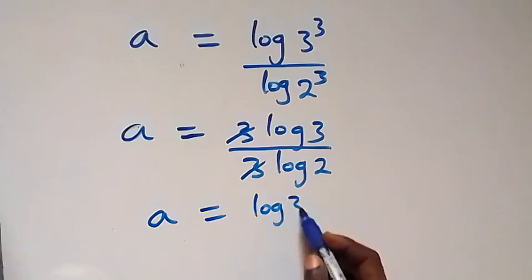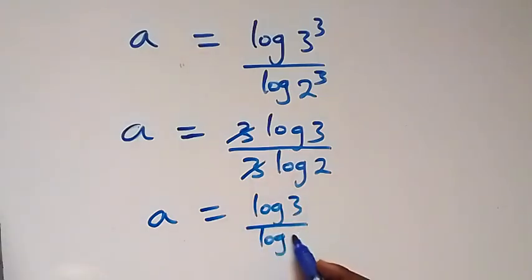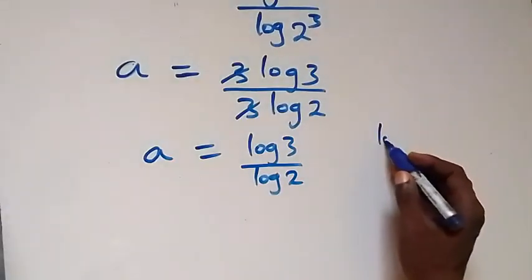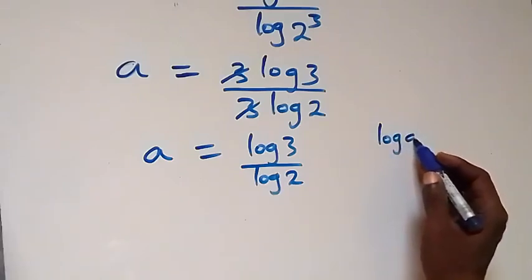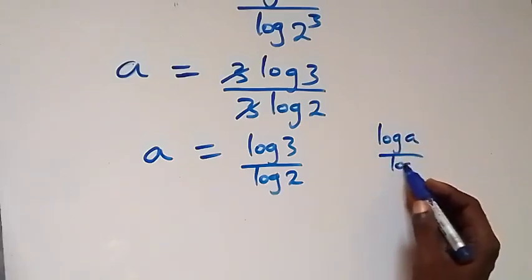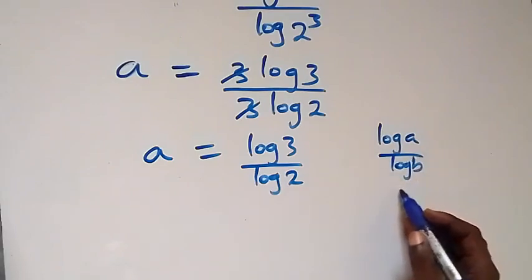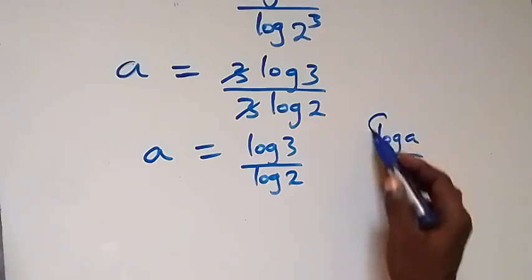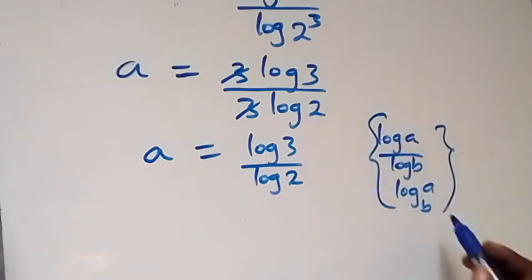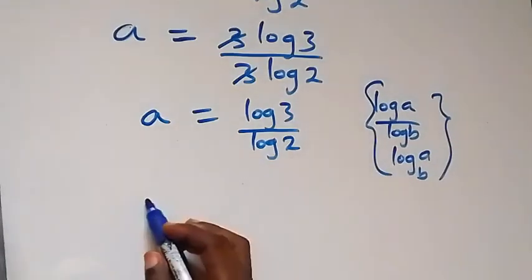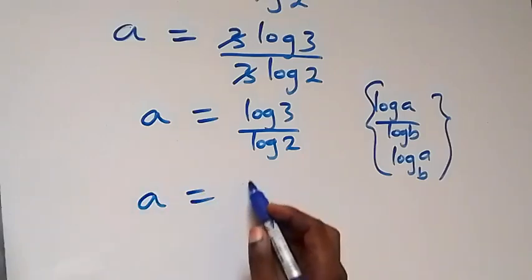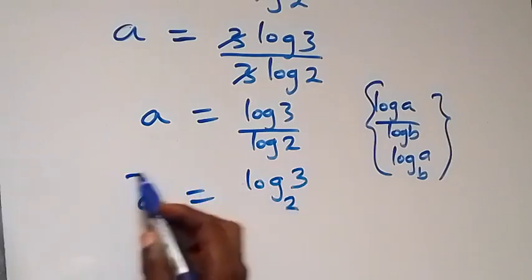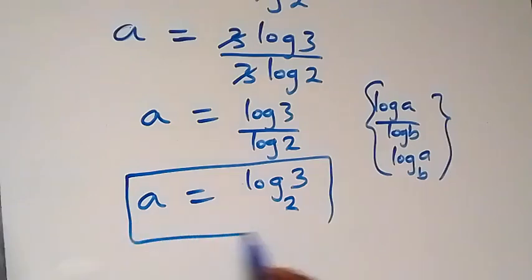From here we can apply the change of base formula: when we have log a over log b, this can be written as log a to base b. Applying this to what we have, a equals log 3 to base 2.